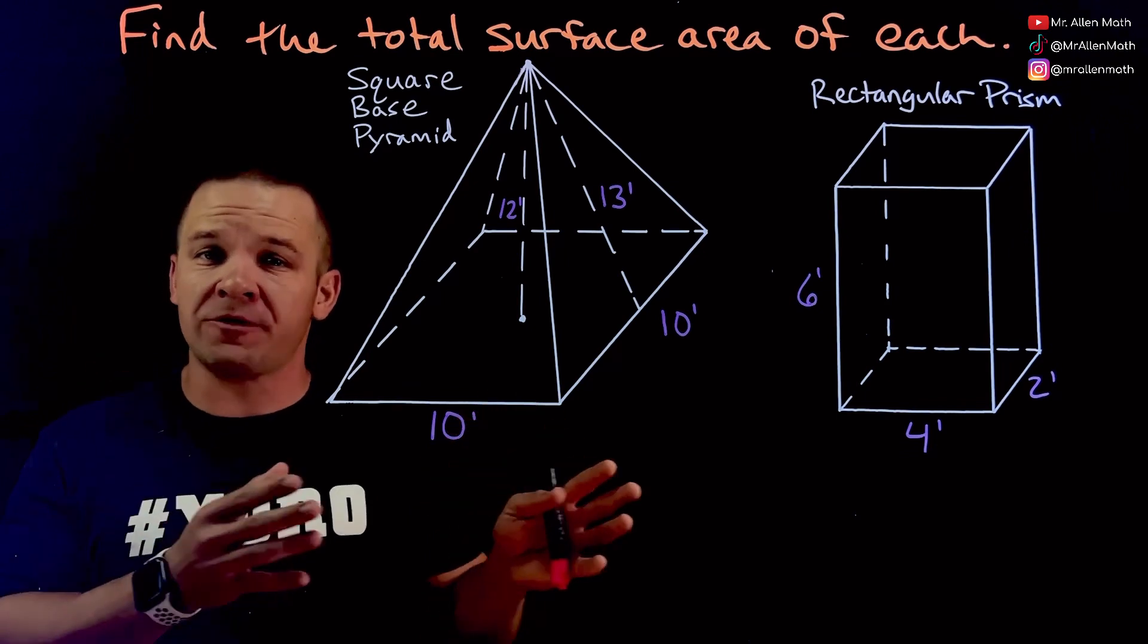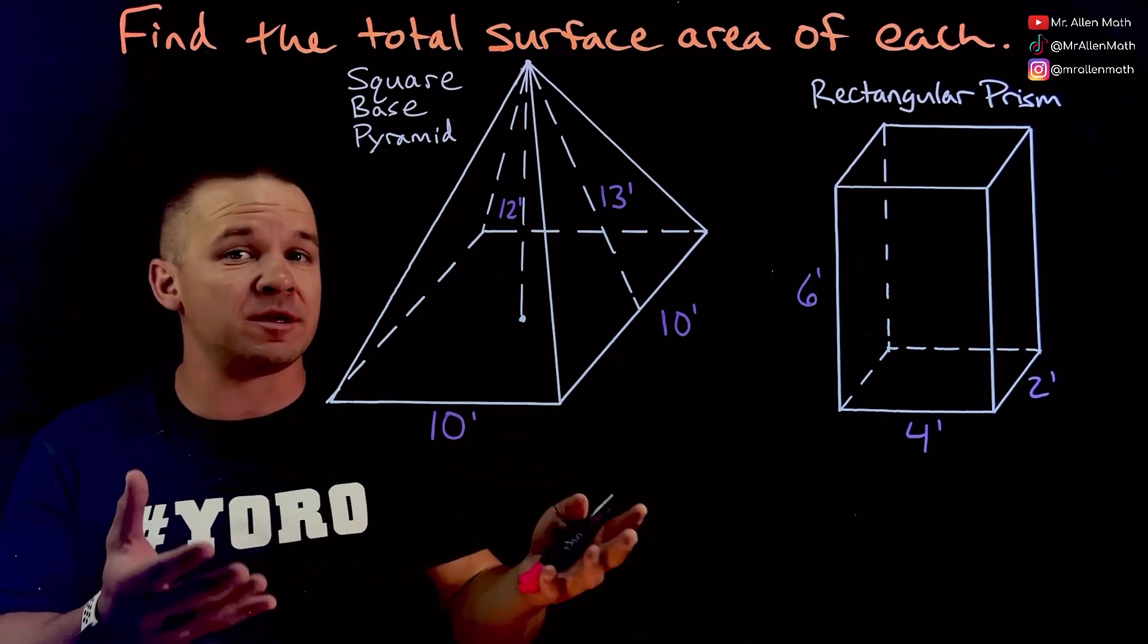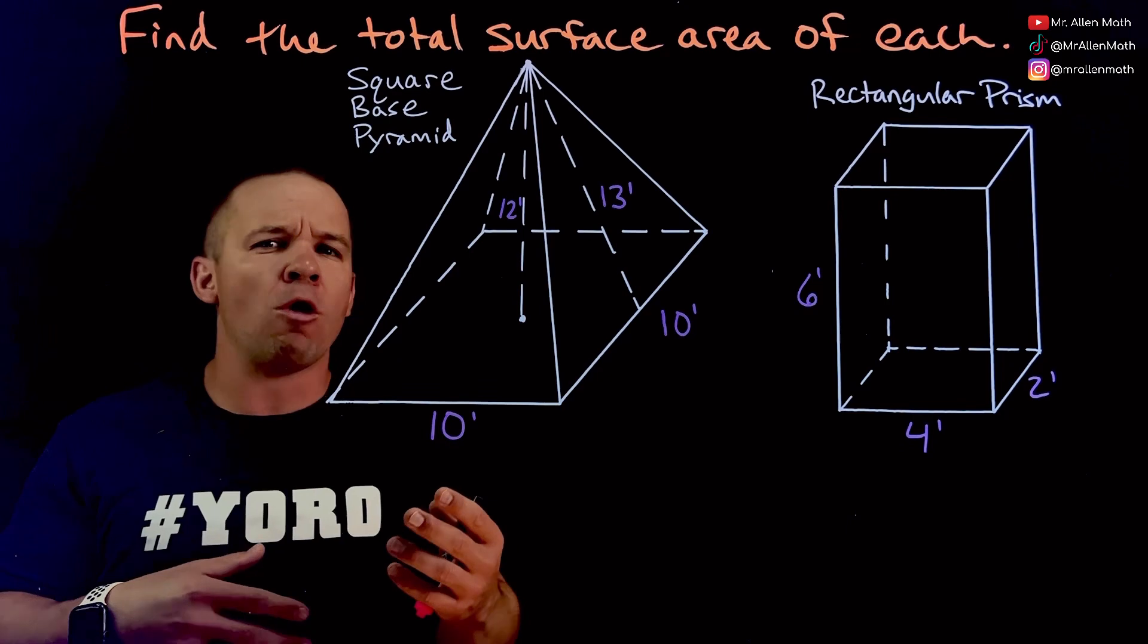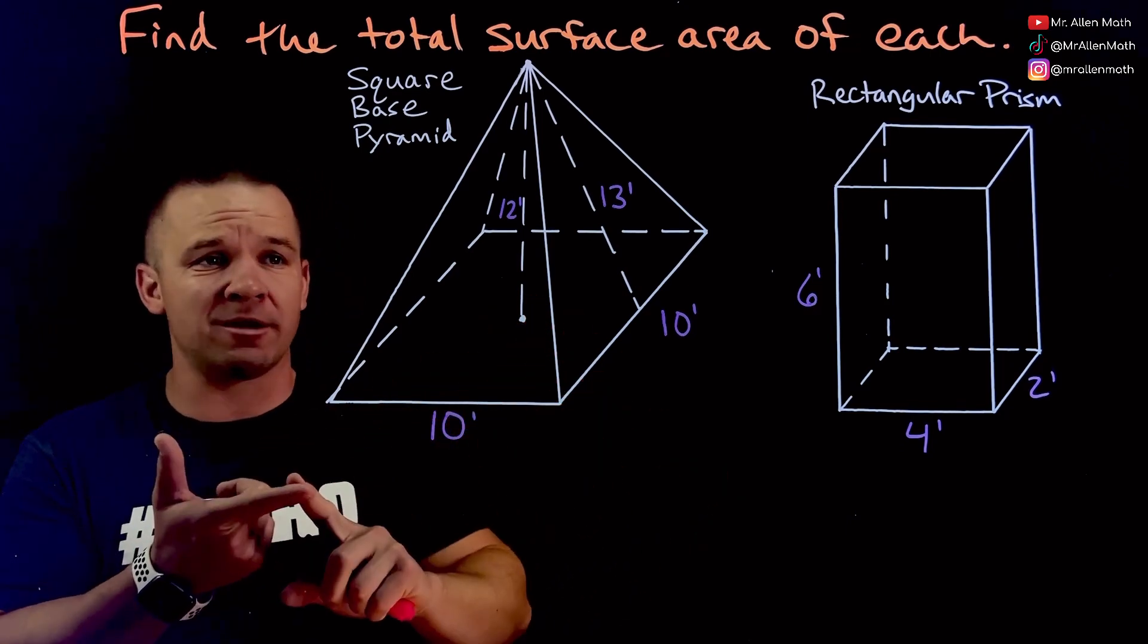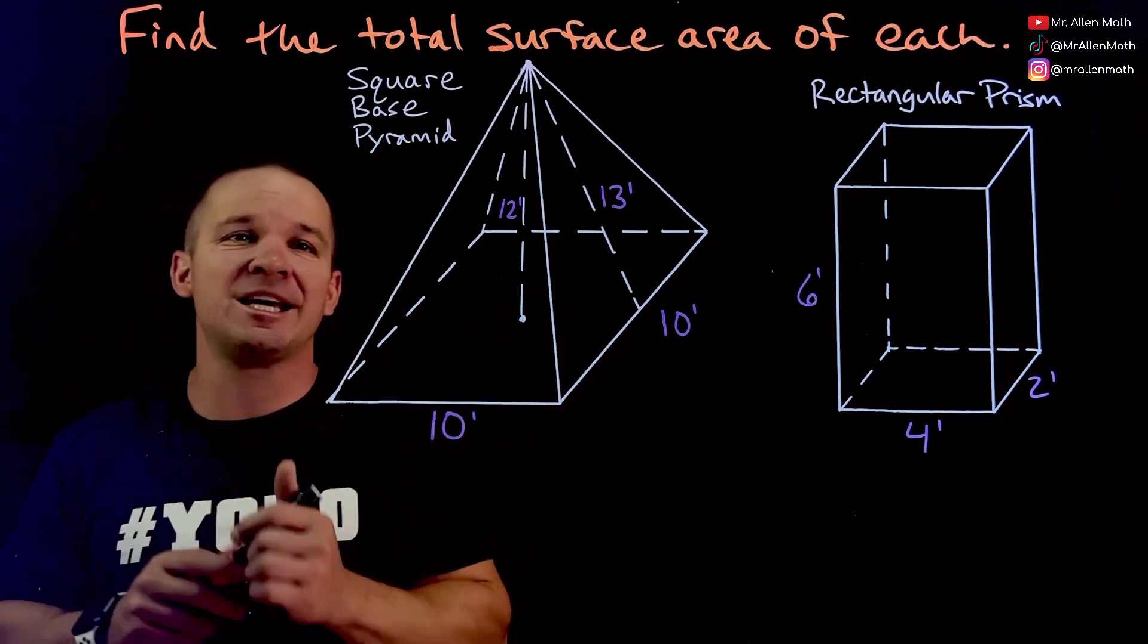Now rule of thumb here when it comes to surface area is we're just adding up all the sides. When things get a little crazy like a cone or maybe a cylinder they get some of their own special type of formulas, but for these guys it's triangles, squares, rectangles. No big deal. Let's get after it.